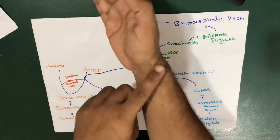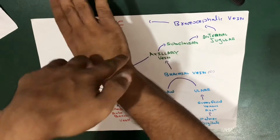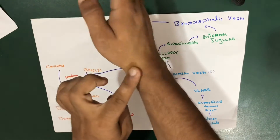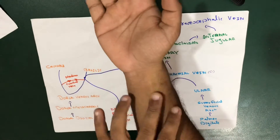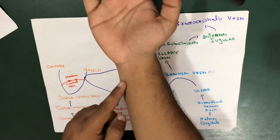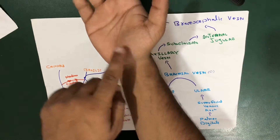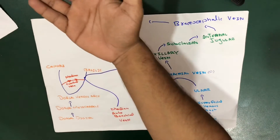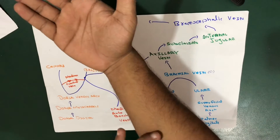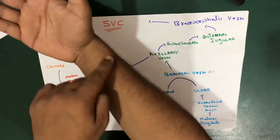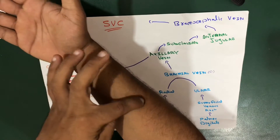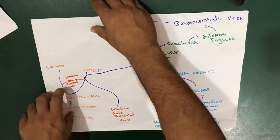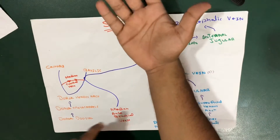Both veins take a turn towards the palmar side. The cephalic vein moves anteriorly, and both veins come together anteriorly in the anterior of the forearm. The cephalic vein moves upward like this, and the basilic vein also moves upward on the medial side, both traveling up towards the proximal forearm.